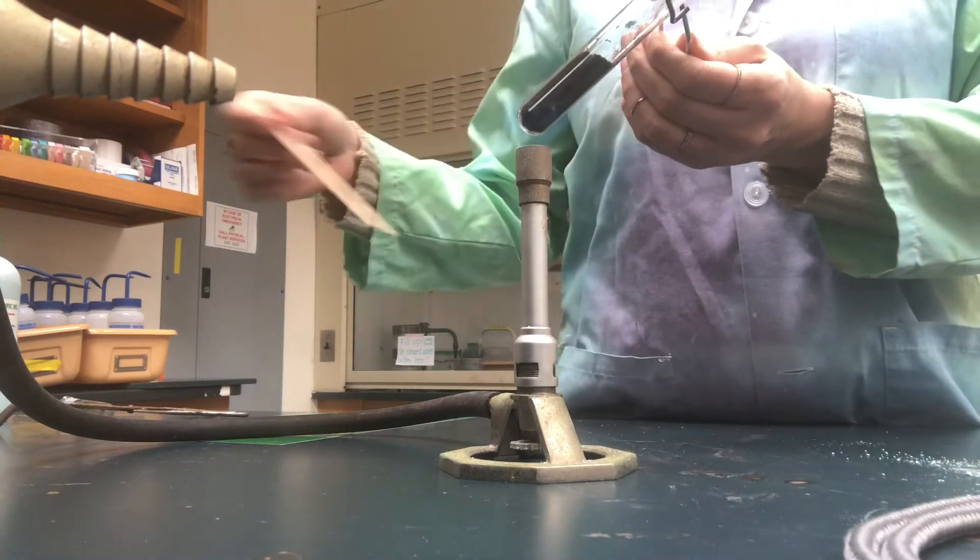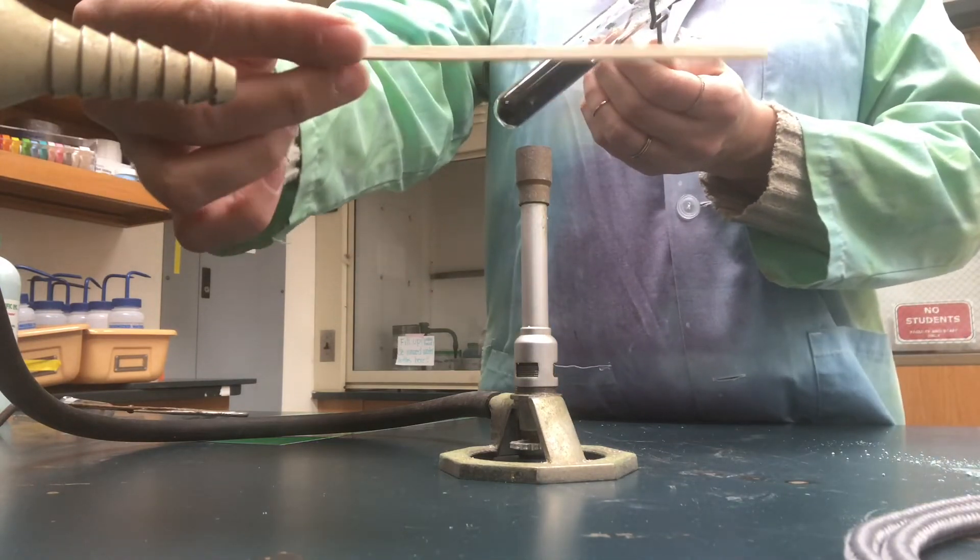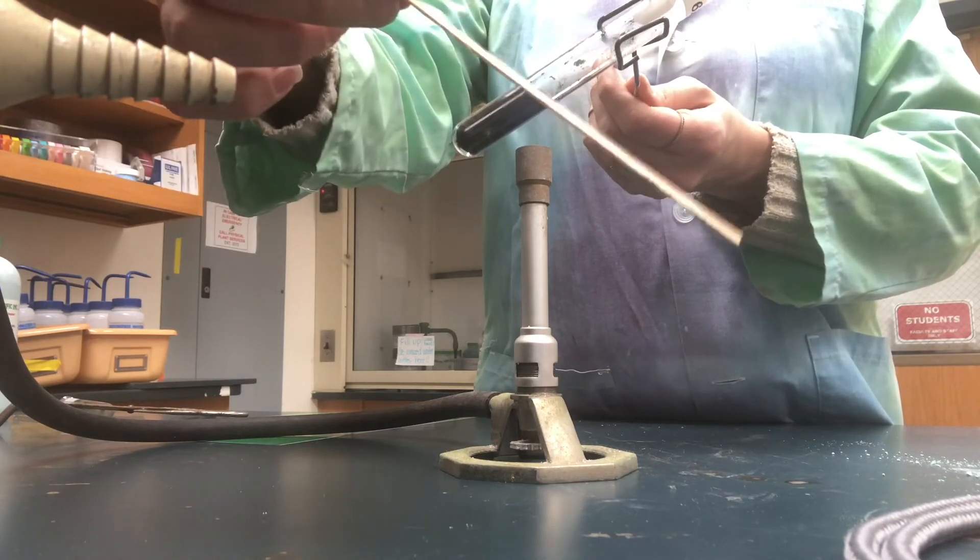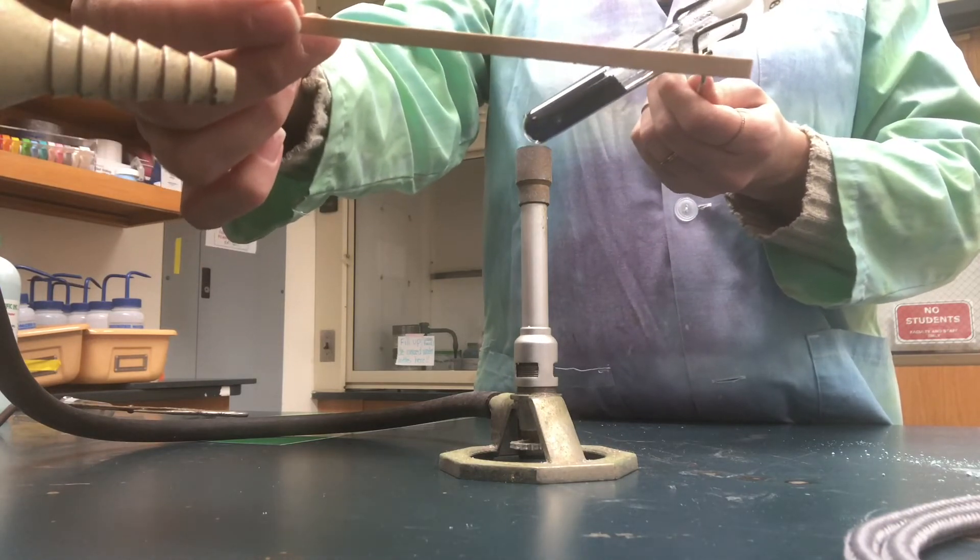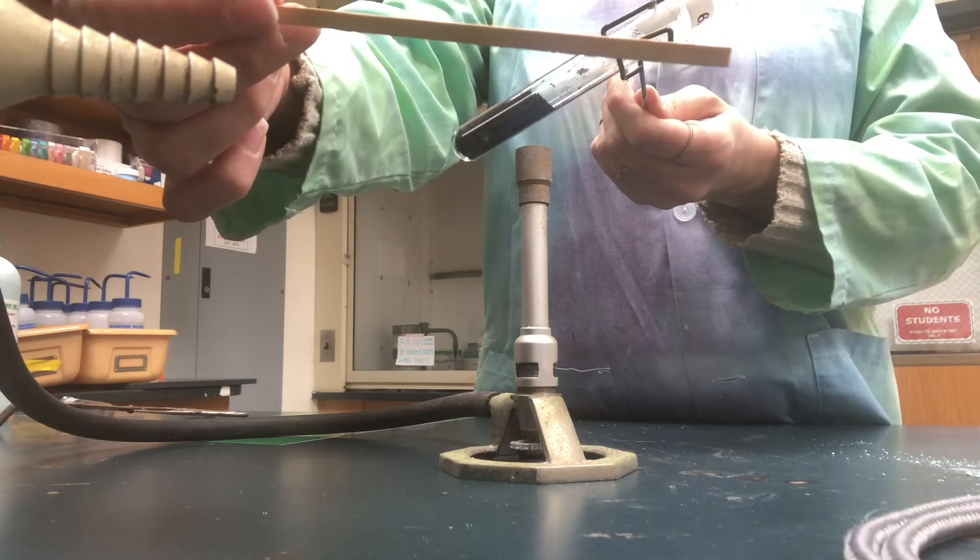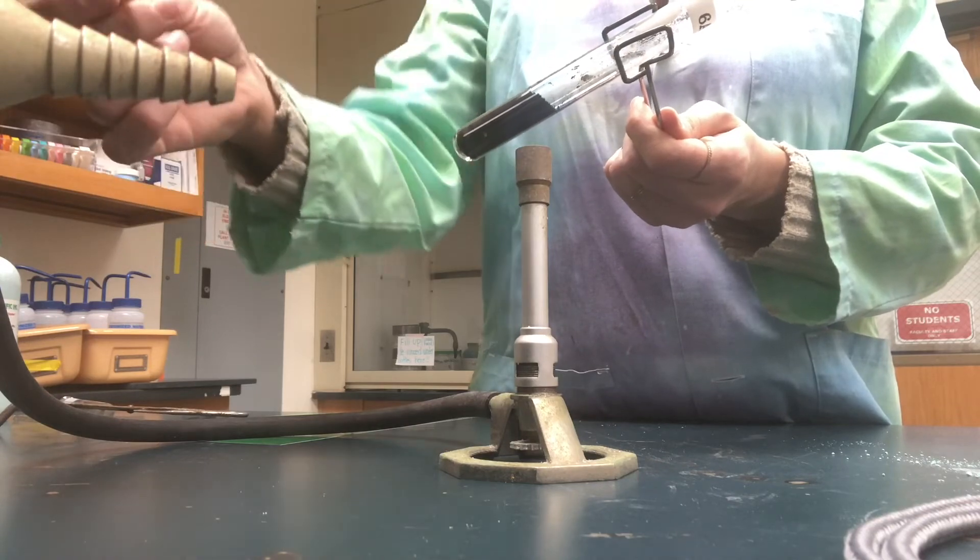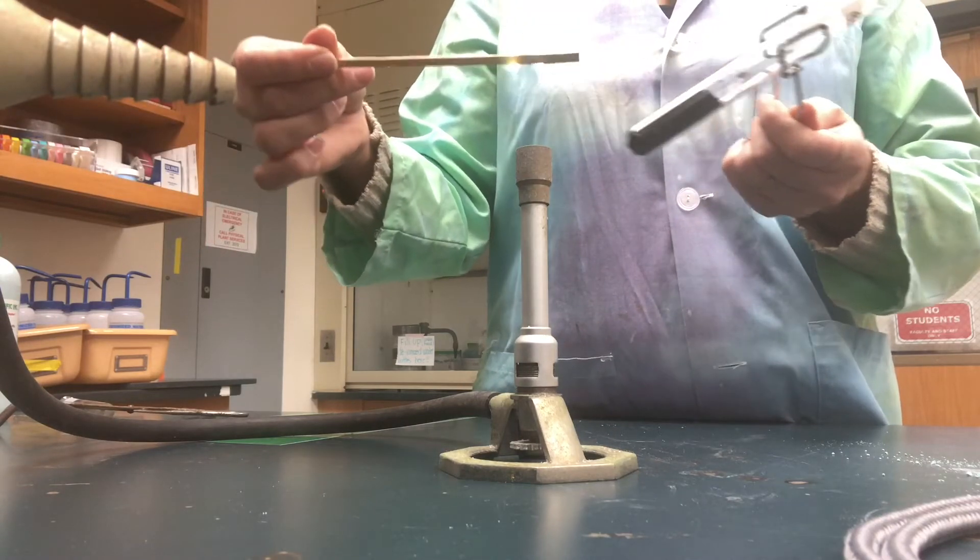This is the wooden splint that you use to check for the presence of a gas. It looks just like a coffee stirrer. Actually it is a coffee stirrer. It's just a piece of wood. I'm going to take the wood and light it on fire.